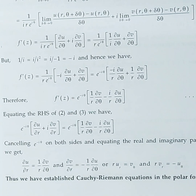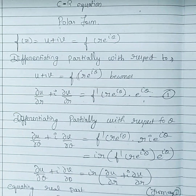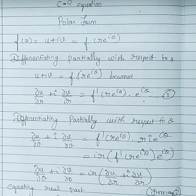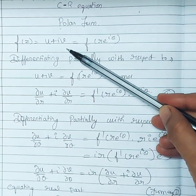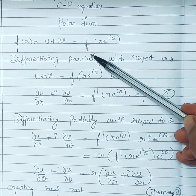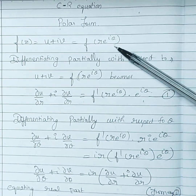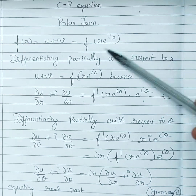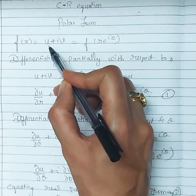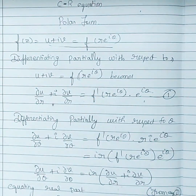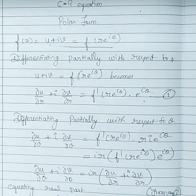There is also a shorter proof available if you find the main proof difficult. Start with f(z) = u + iv = f(re^{iθ}) in polar form. Differentiate this equation partially with respect to r and then partially with respect to θ.